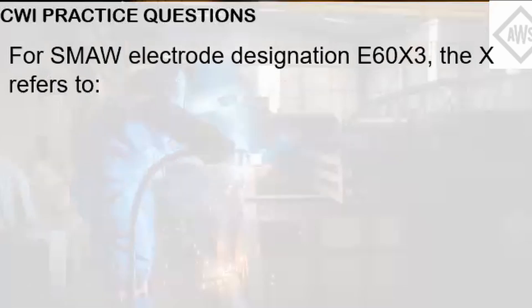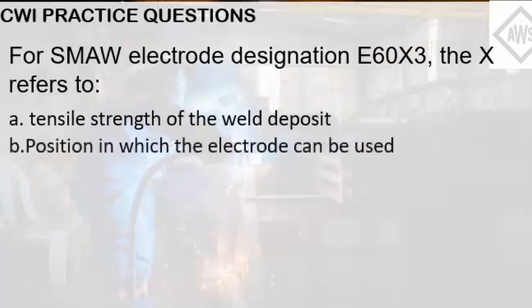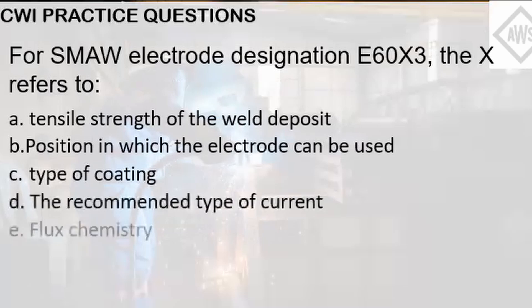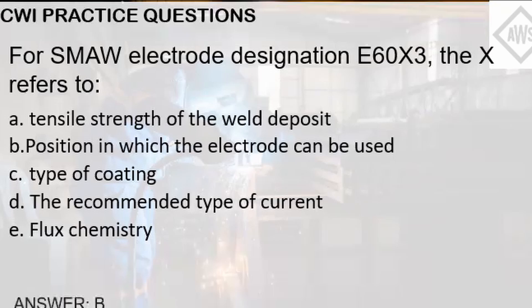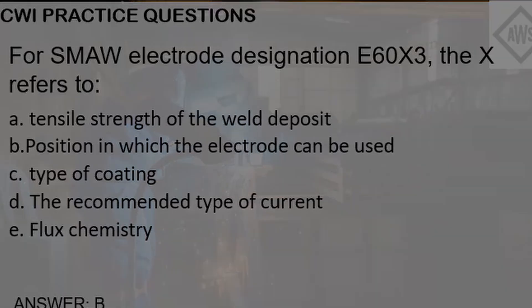For SMAW electrode designation E60X3, the X refers to: A, Tensile strength of the weld deposit; B, Position in which the electrode can be used; C, Type of coating; D, Recommended type of current; E, Flux chemistry. In this question, X denotes the position in which the electrode can be used. Digit 1 denotes that the electrode can be used for all positions. Digit 2 means high-deposition electrode, not suitable for overhead position since molten metal will fall on the welder. Digit 3 is no longer used and is considered an old designation. Digit 4 denotes welding in a downhill progression, and digit 5 also denotes position of use.